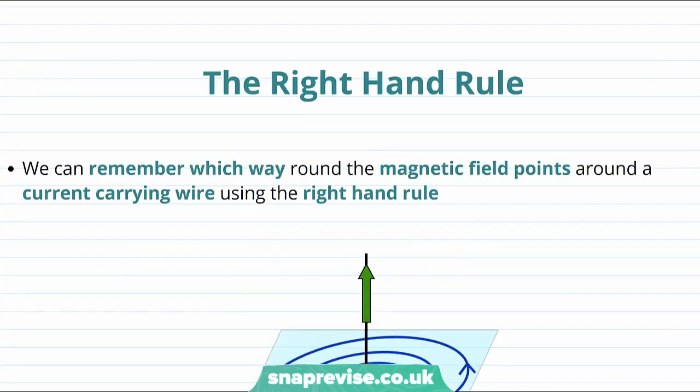At this point we might think that we know enough to be able to get a blank piece of paper and without looking try and draw the magnetic field around a wire. But we would realize that there's something we've forgotten, which is which way round does this magnetic field go?